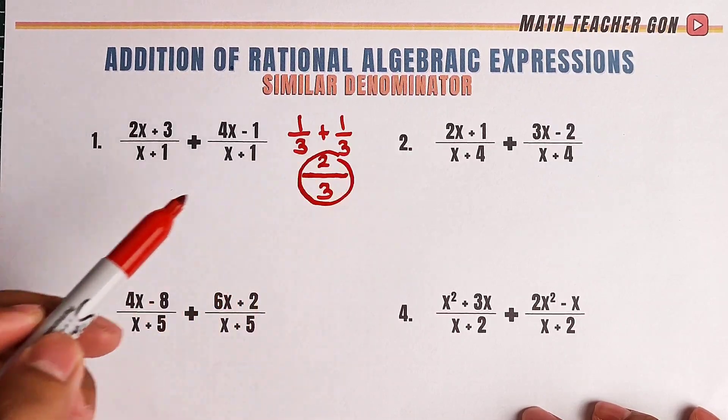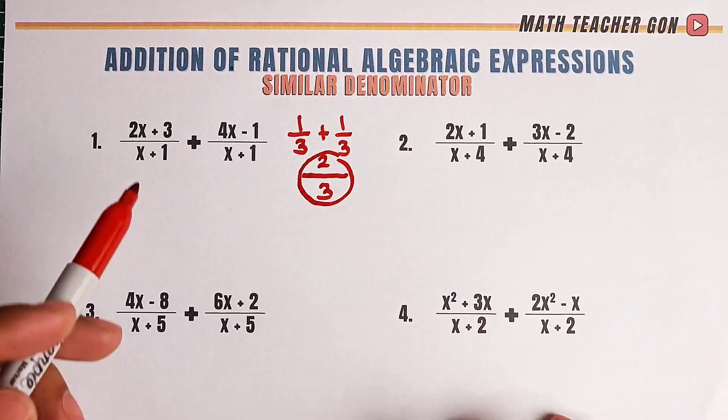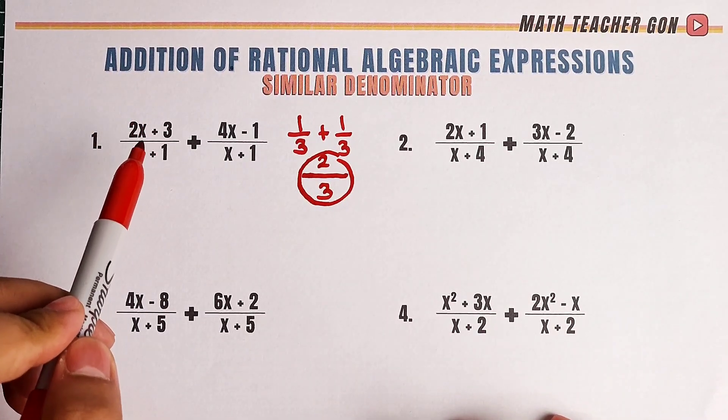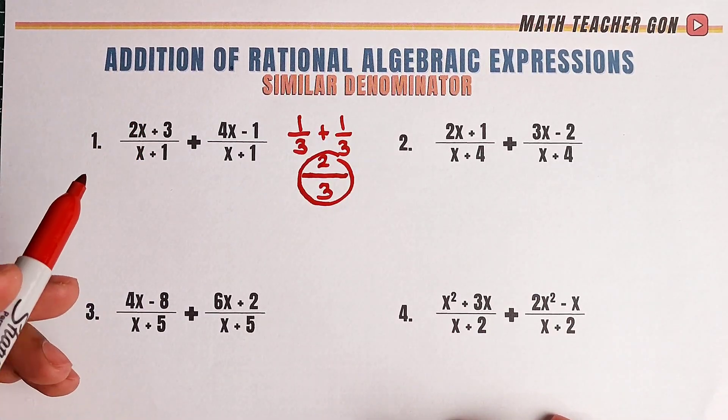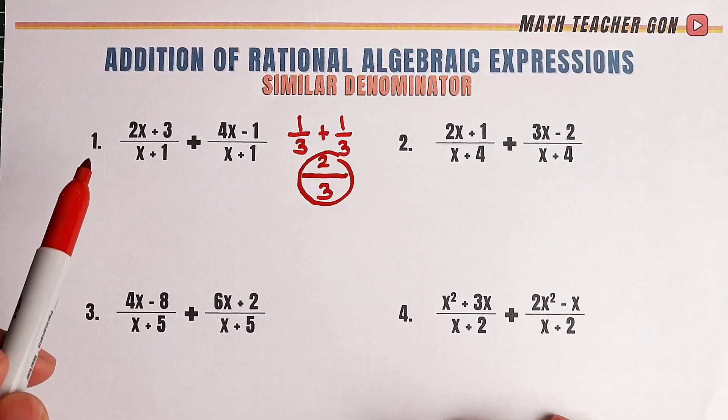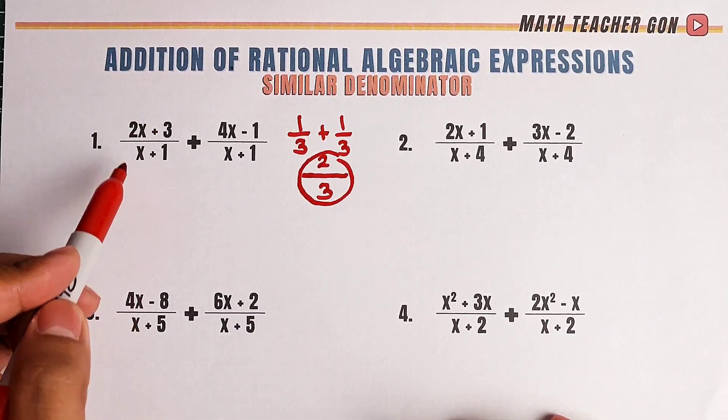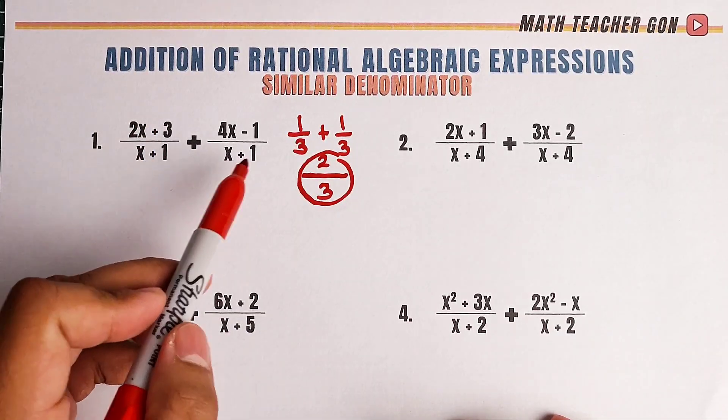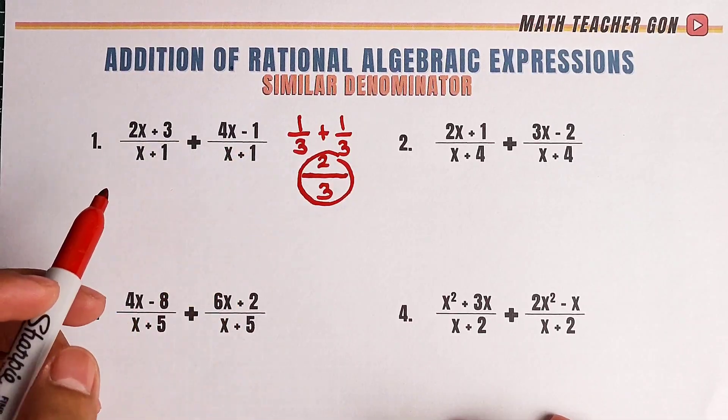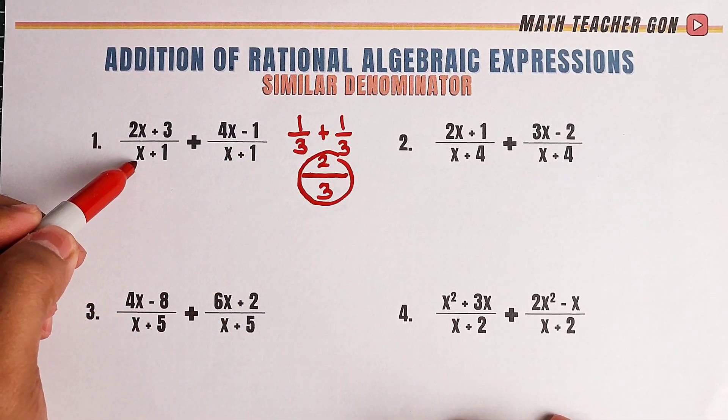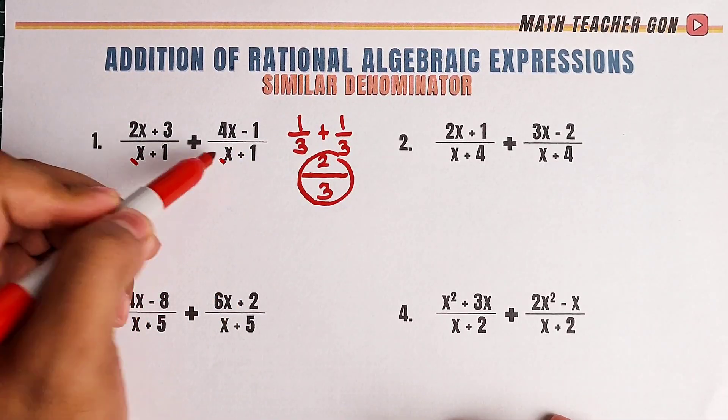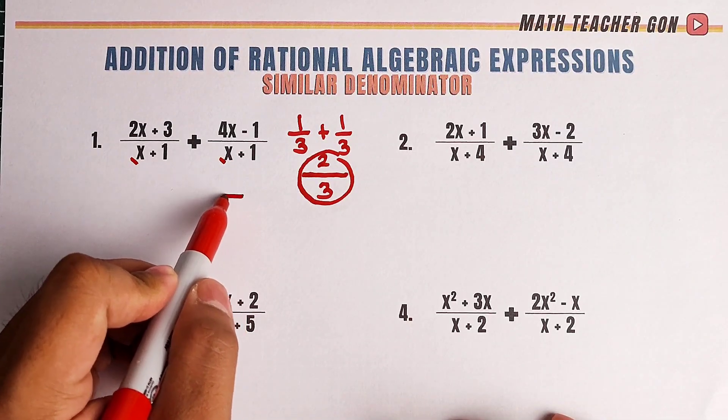Same process, but the difference here is that the numerators are algebra expressions. So how are we going to do that? Let's do number 1. 2x plus 3 over x plus 1 plus 4x minus 1 over x plus 1. The similar denominators are x plus 1 and x plus 1. What we need to do is to copy first.